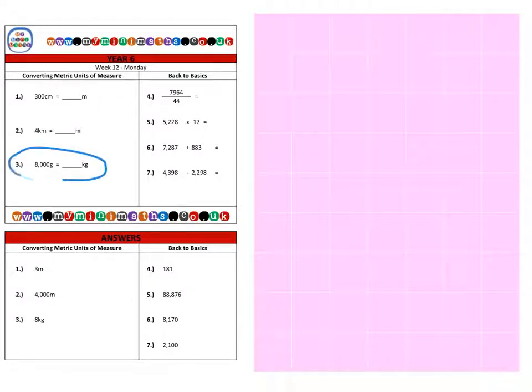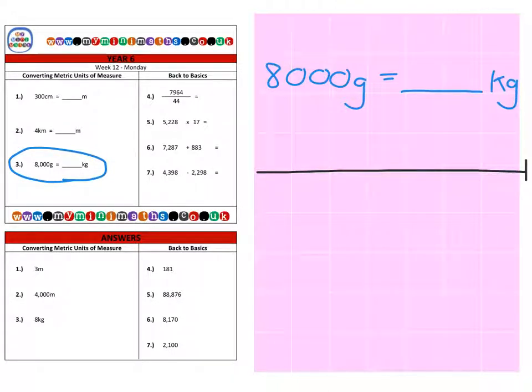Finally we're on to question three. This time we're looking at grams and kilograms. We have 8,000 grams and we're going to work out how many kilograms that is equivalent to. Again, we're going to take our 8,000 grams and put it onto a line.